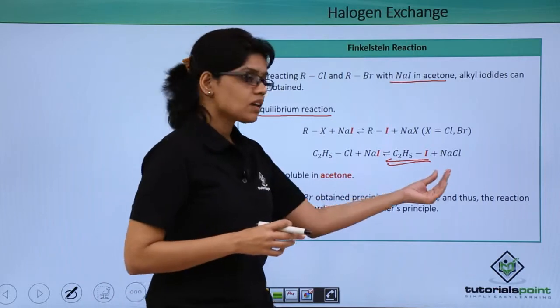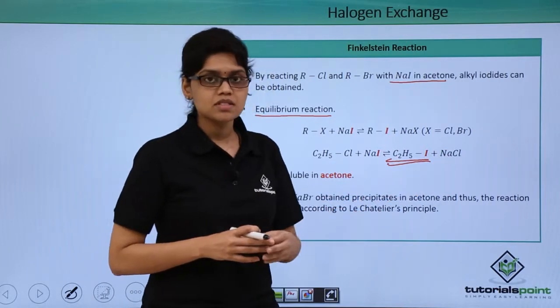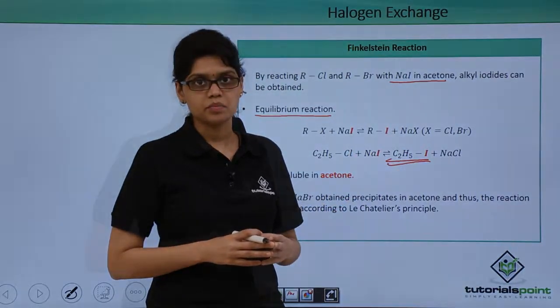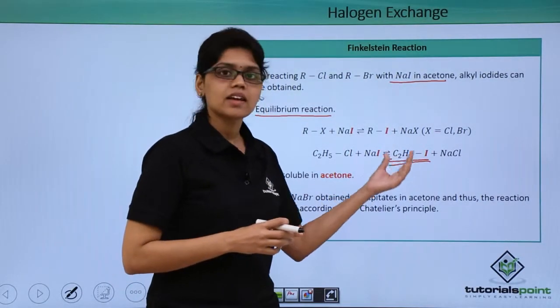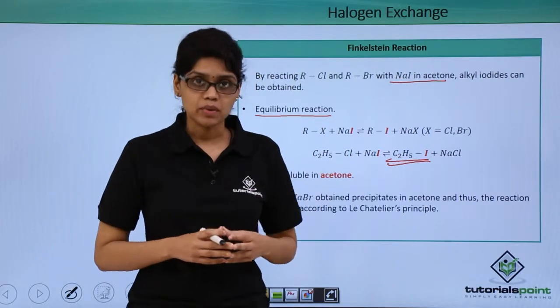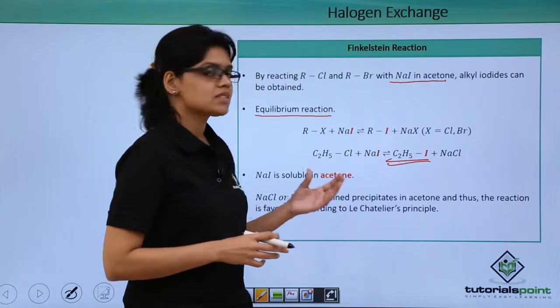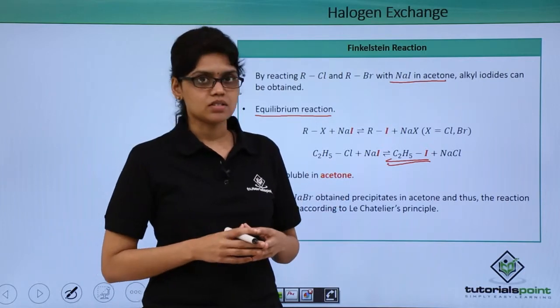Since they precipitate out, we can easily remove them from the mixture and help this reaction go in the forward direction. This is how we obtain alkyl iodides from alkyl chlorides and bromides via halogen exchange. This reaction is called the Finkelstein reaction.